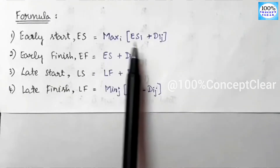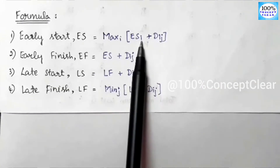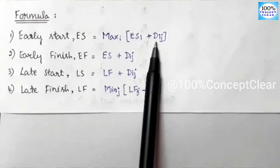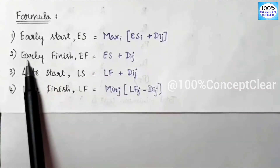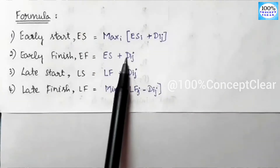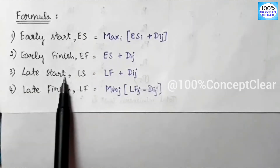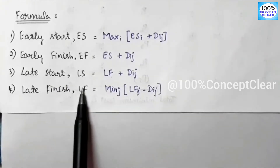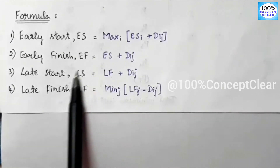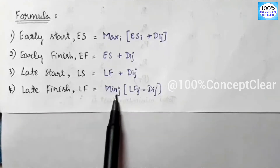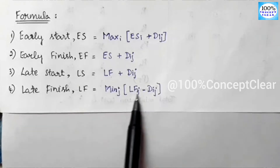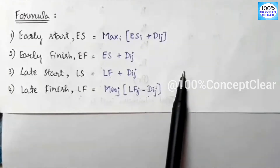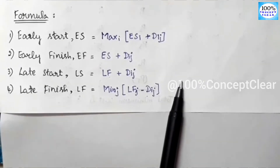The Early Start formula is: ES = maximum of (ES_i + D_ij). The Early Finish is obtained by adding duration to Early Start. Late Start is: LS = LF - D_ij. Late Finish is calculated as the minimum of (LF_j - D_ij). These formulas will be used to solve examples, with detailed solutions linked in the description.